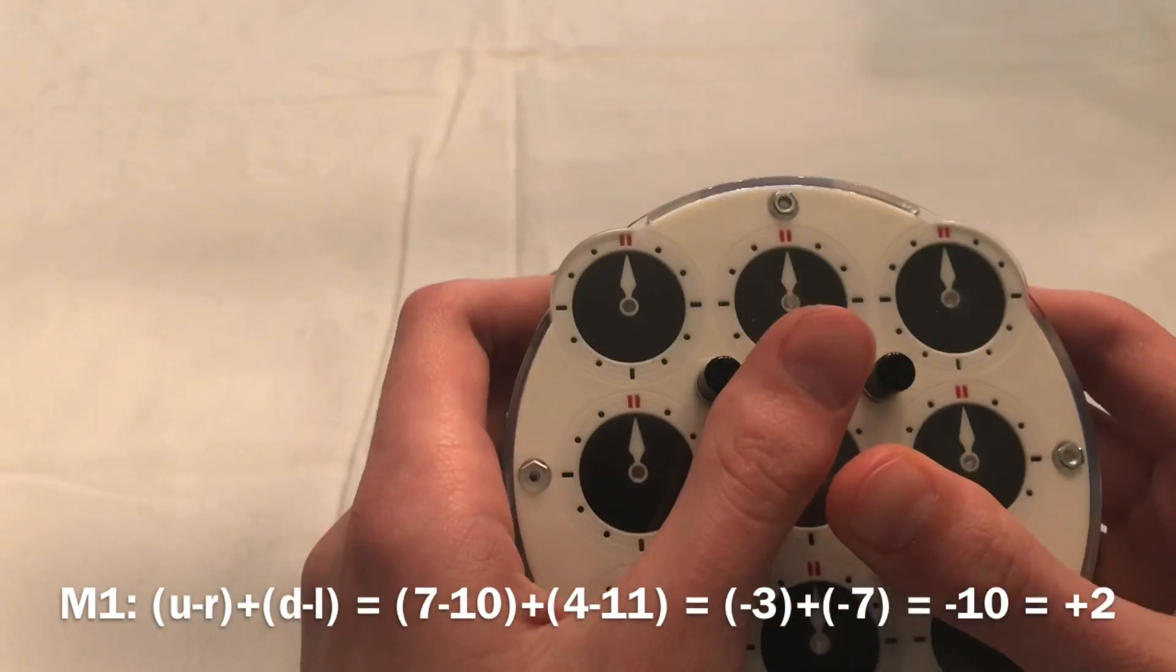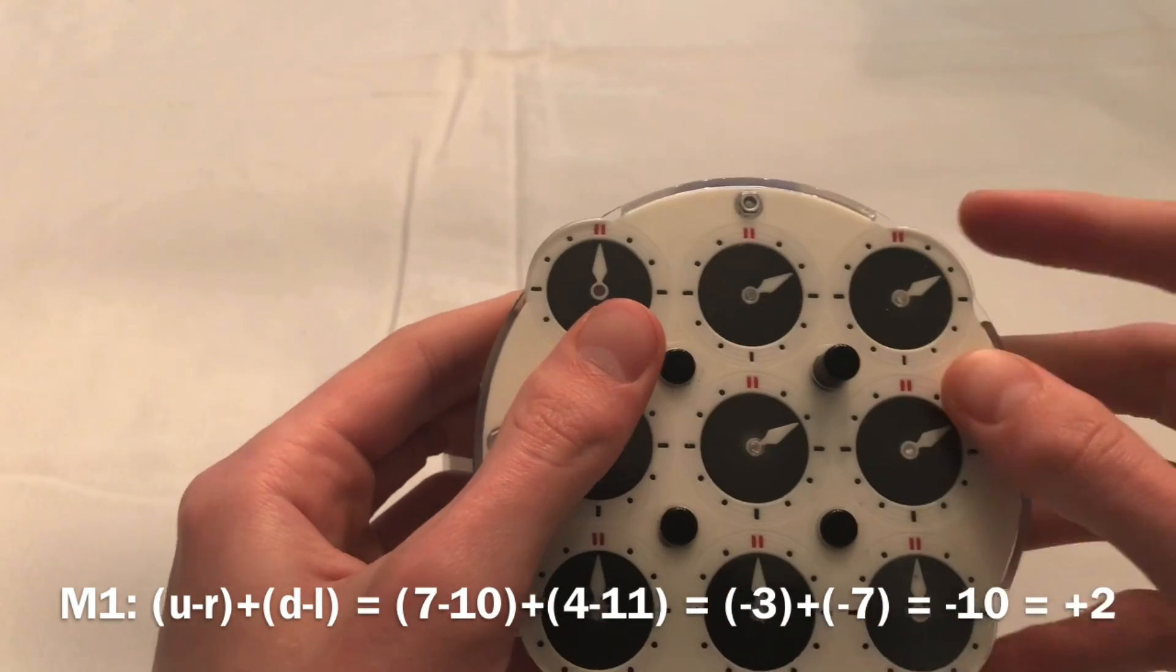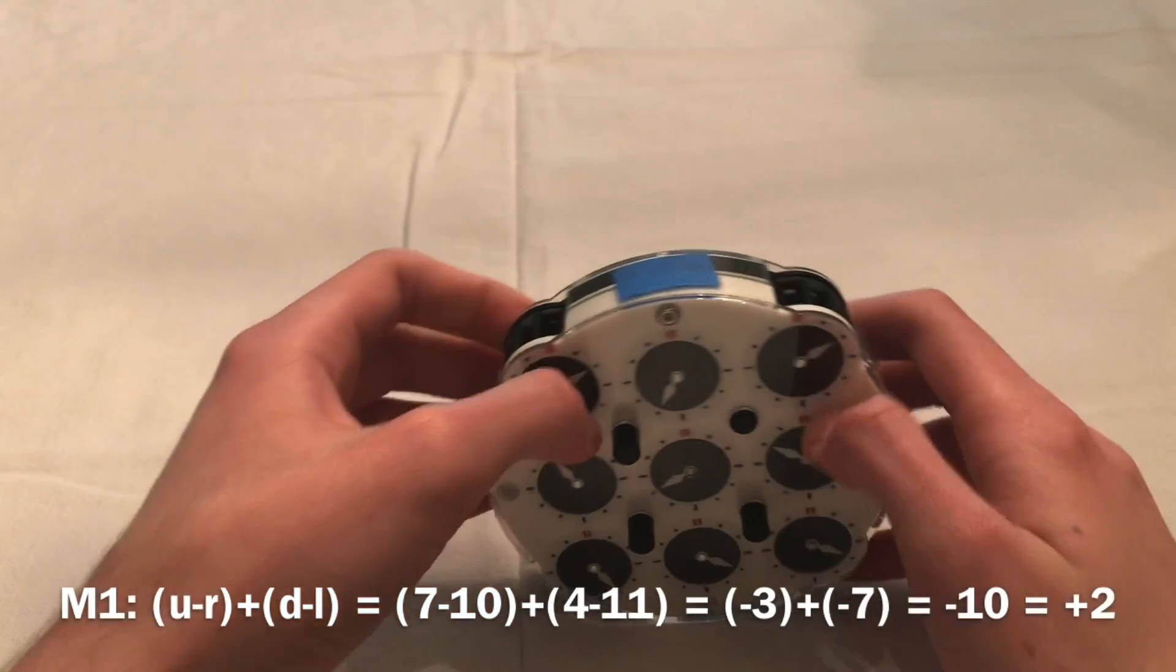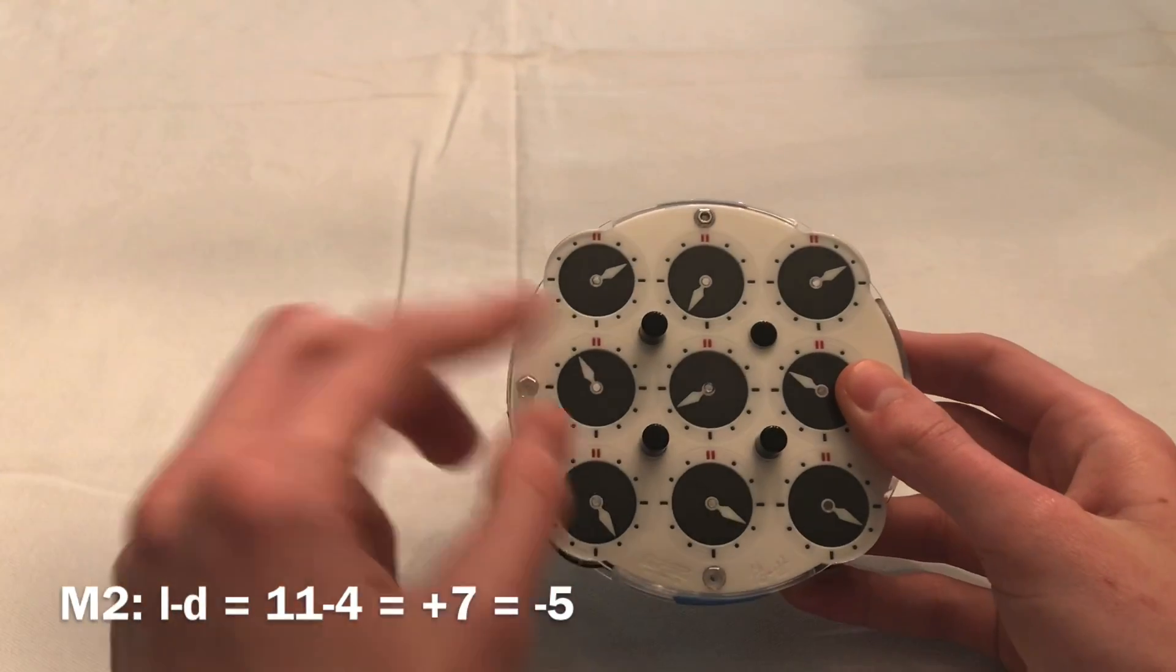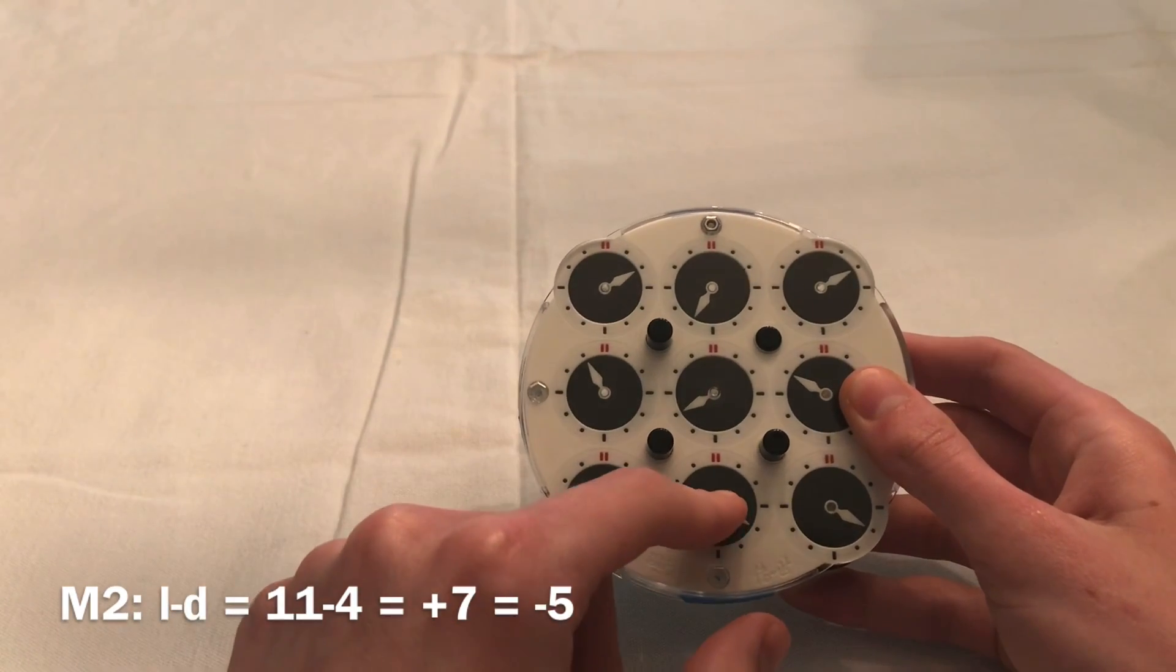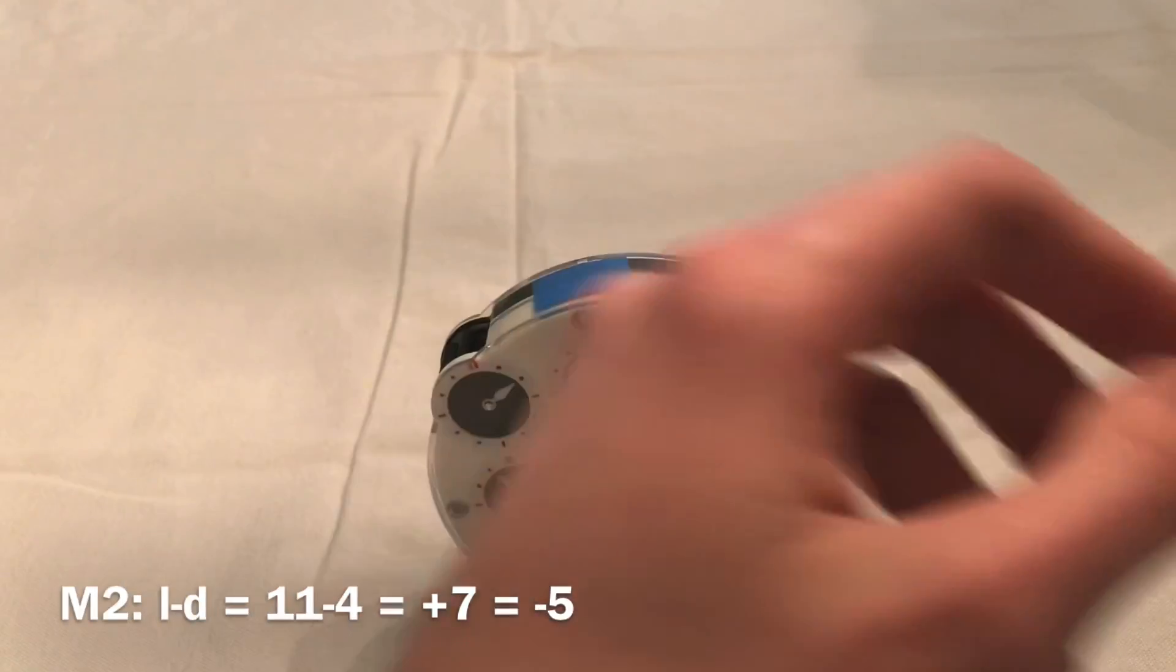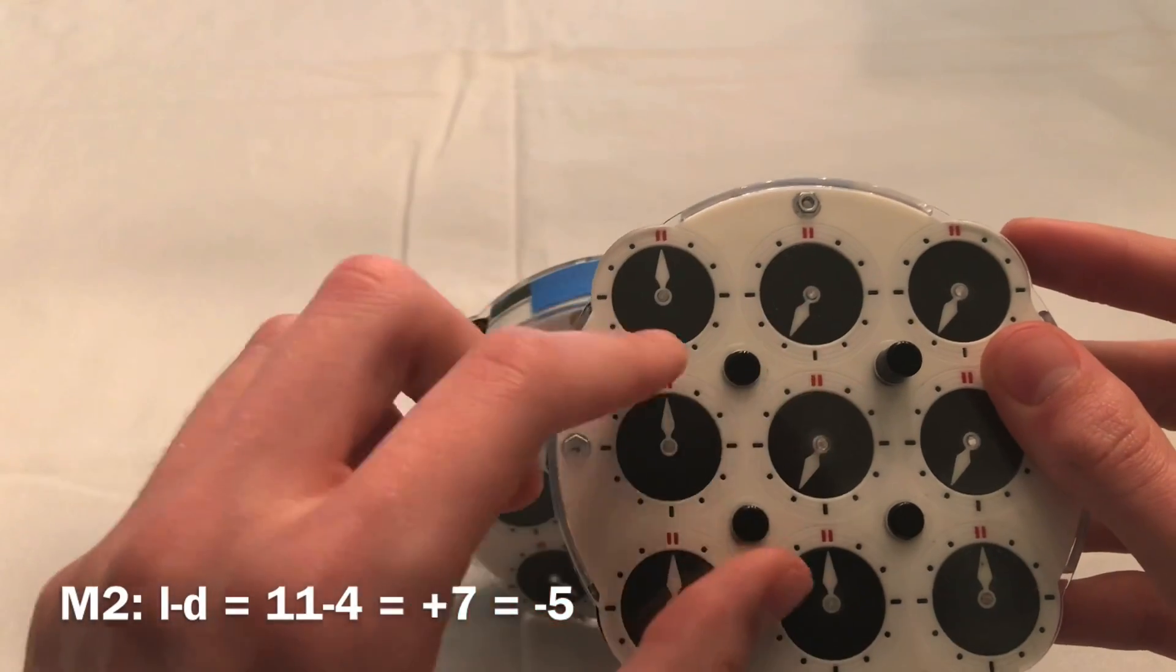Why is this? Because on a clock, when you turn it negative 10, it's the same result as if you turned it plus 2. The next number you will calculate is M2. M2 is L minus D, so 11 minus 4, which is equal to 7. 7 is equal to negative 5, because if you do plus 7, it's the same result as if you did negative 5.